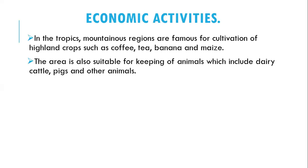In the tropics, mountain regions are famous for the cultivation of highland crops such as coffee, tea, banana, and maize. The area is also suitable for keeping animals, including dairy cattle, pigs, and other animals.